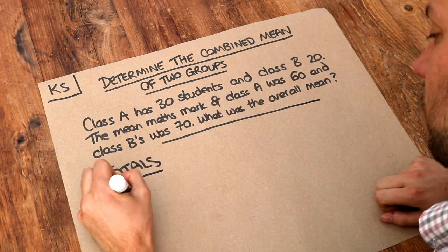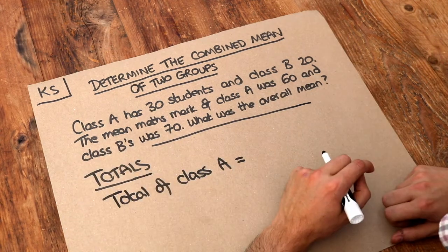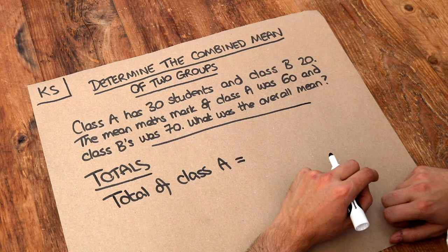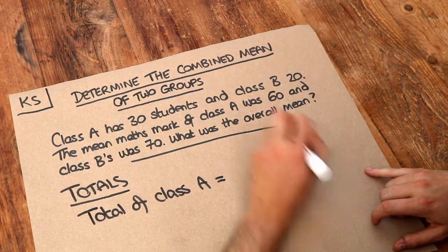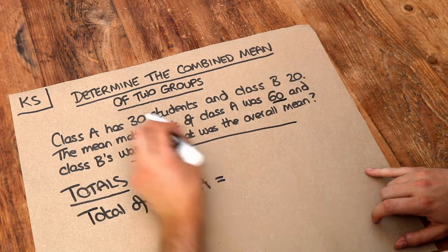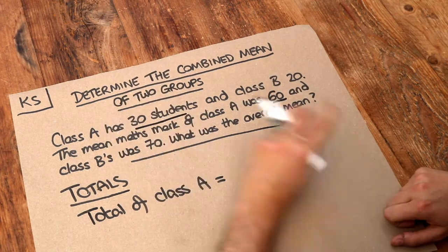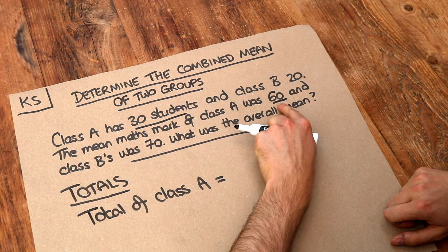So let's do that, the total of class A. Now do you remember in a previous video we said we could find the total of something if we knew the mean and we knew how many values there were. So we've got 30 students with a mean of 60.